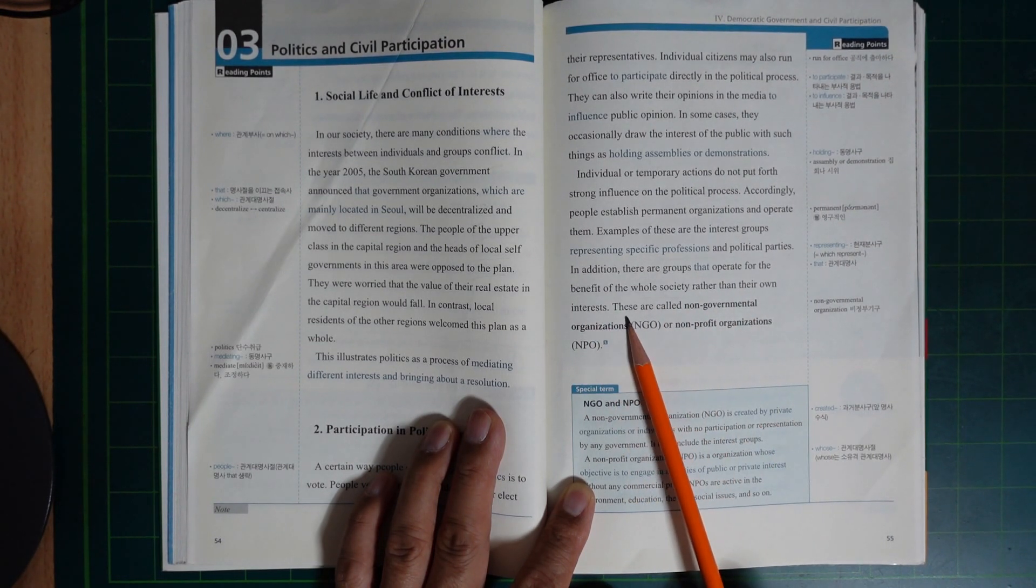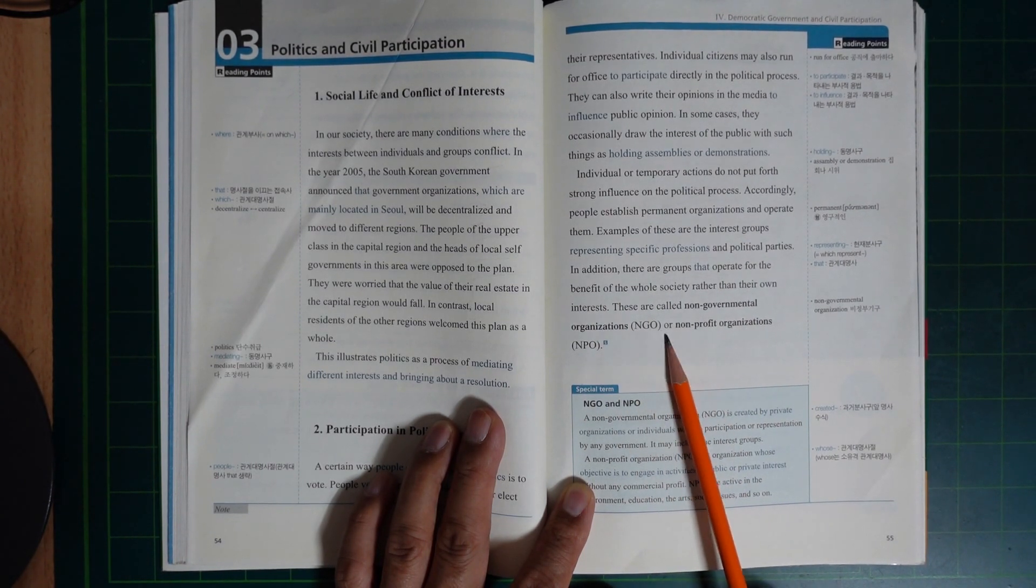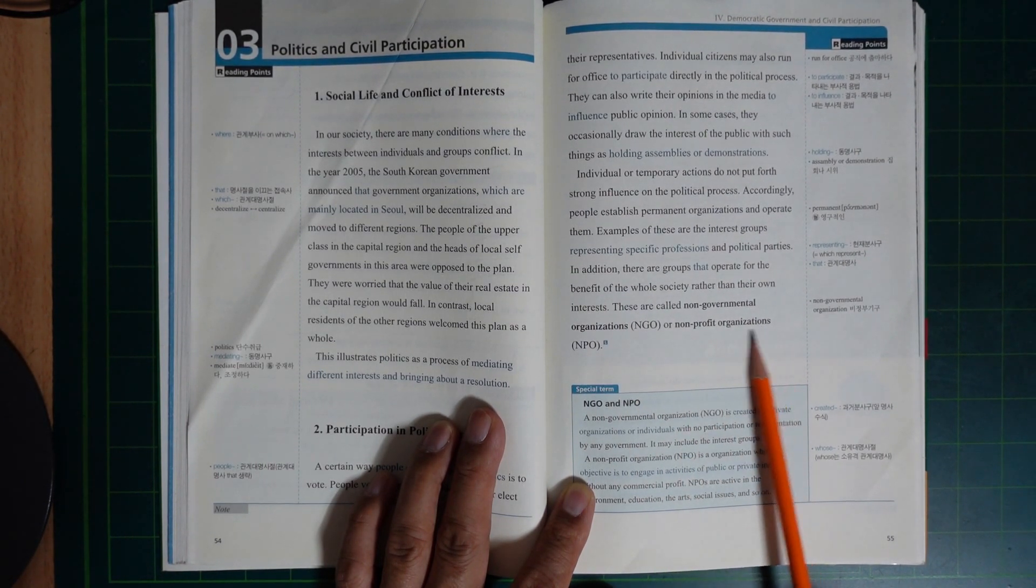...and political parties. In addition, there are groups that operate for the benefits of the whole society rather than their own interests. These are called non-governmental organizations (NGO) or non-profit organizations (NPO).